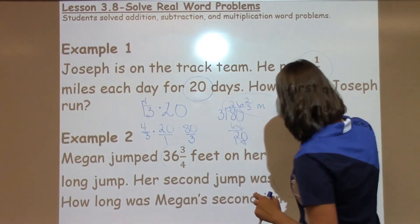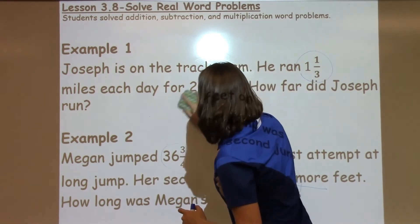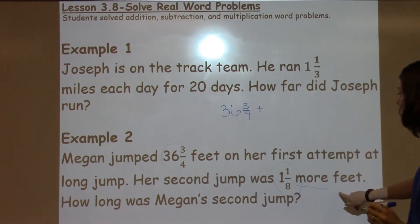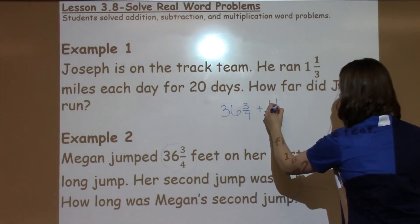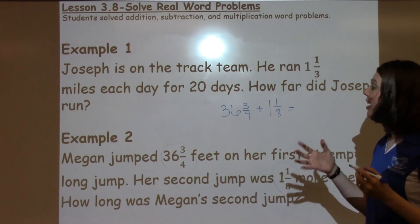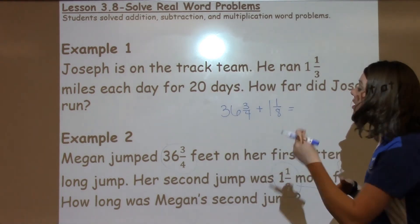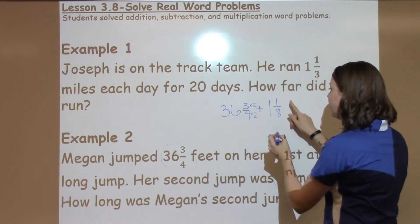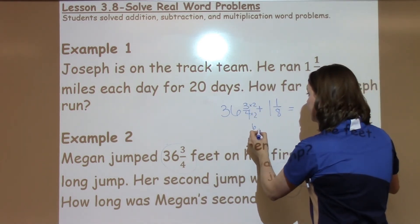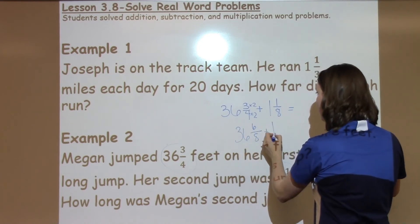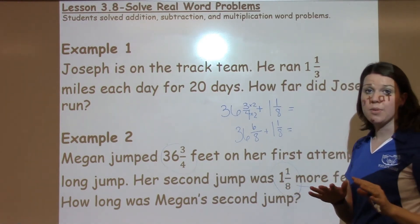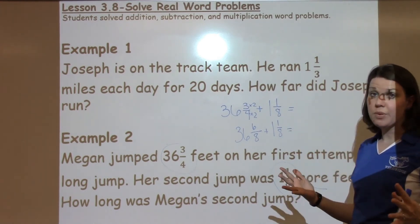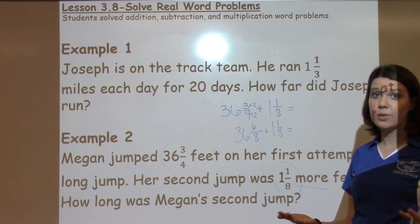I'm going to start off with my very first number, which I have 36 and 3 fourths feet. I need to add, because I'm going to have more feet, and I'm going to have 1 and 1 eighth. Now your fifth grader should be able to tell you that we cannot add these fractions currently because they do not have the same denominator. Some fifth graders might see a shortcut — they might see 4 times 2 gives me 8, which means I don't need to change this fraction, so now I'd have 6 eighths. So I have 36 and 6 eighths, plus 1 and 1 eighth. Some fifth graders may want to take 4 times 8, and 8 times 4, to get a large number which will need to be reduced — but that's completely fine. It's whatever your fifth grader is most comfortable with.